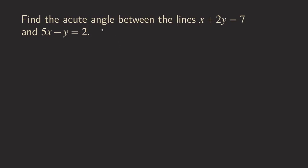Hi everyone, it's Wilson here. Today let's talk about finding the acute angle between the lines x plus 2y equals 7 and 5x minus y equals 2. For this problem, there are actually many ways to do it, but since I've been making videos about vectors, I'm going to solve this problem using vectors. So now let's get started.